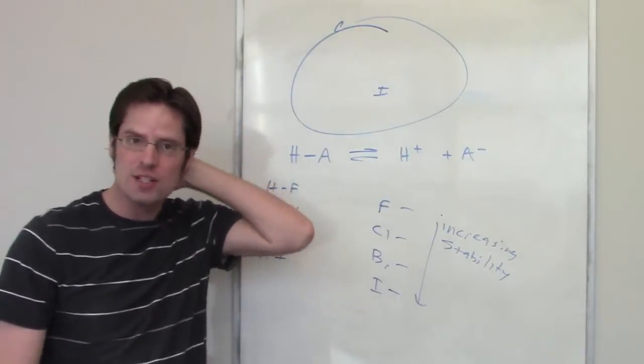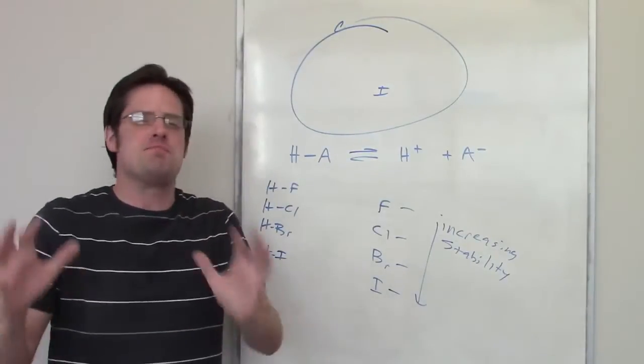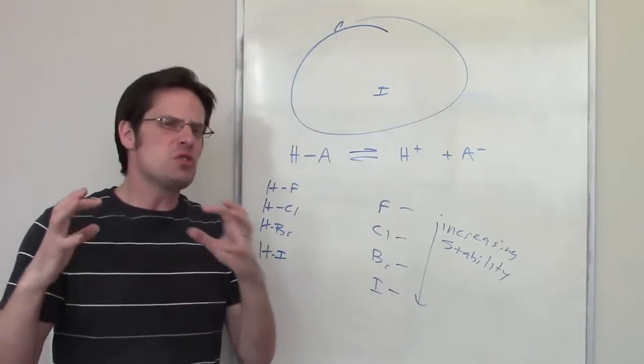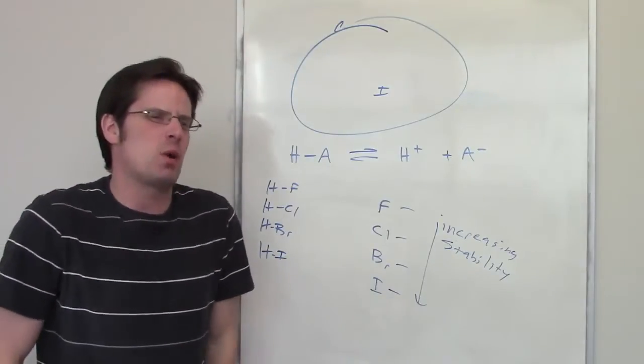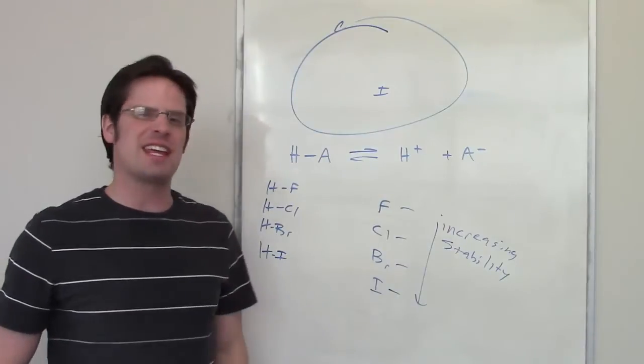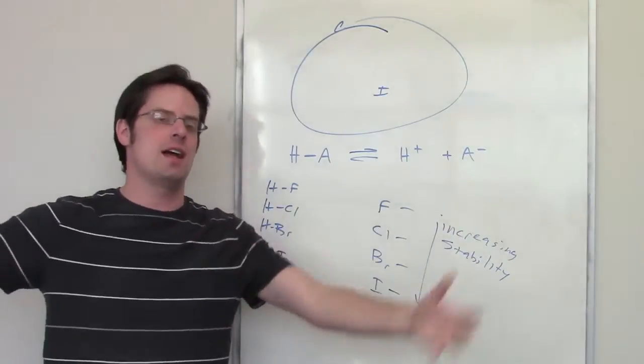Br- in contrast, a little bit smaller. It's like spreading an electron across maybe a basketball. What about a chlorine? Well, chloride is smaller still, so that would be like spreading it across maybe a baseball. Still stable enough, it can handle it, but definitely feels it a lot more than a Br-, which feels it a lot more than an I-.